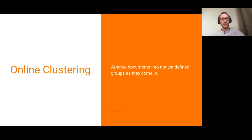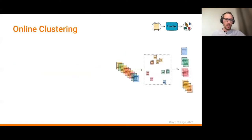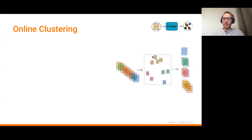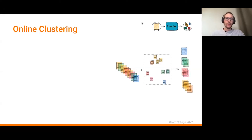Now for the second part — online clustering. We now have a large collection of semantically enriched documents with embeddings, and we want to group them. Clustering arranges documents into not yet defined groups as they come in, since we're doing it in an online fashion. The clustering is also just a normal transform in our Beam pipeline.